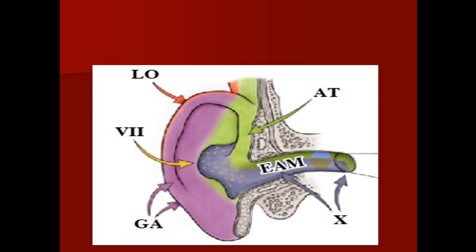So the nerve supply of the ear comes from four cranial nerves: trigeminal, facial, glossopharyngeal, and vagus, plus C2-C3.